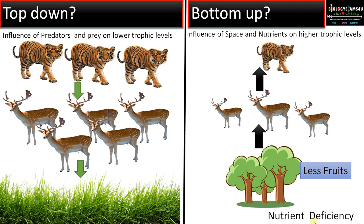The second one is bottom-up trophic cascade, where the influence of space and nutrients affects higher trophic levels. For example, suppose there is nutrient deficiency in the soil — that will lead to fewer fruits on trees, causing food shortage at the primary consumer level, which causes decline of population at the primary consumer level and definitely impacts the number at the predator level also. This influence of space and nutrients on higher trophic levels is termed as bottom-up trophic cascade.